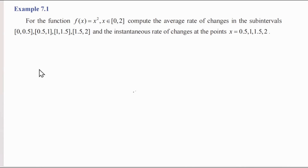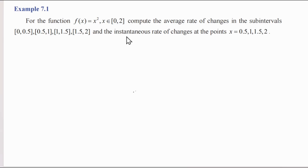Hello students, welcome to the video of example 7.1. For the function f of x is equal to x square, x belongs to [0,2]. Compute the average rate of changes in the sub-intervals [0, 0.5], [0.5, 1], [1, 1.5], [1.5, 2], and the instantaneous rate of changes at the points x equal to 0.5, 1, 1.5, and 2.